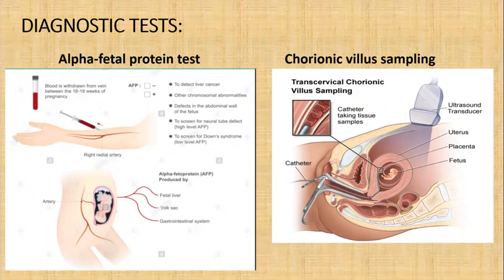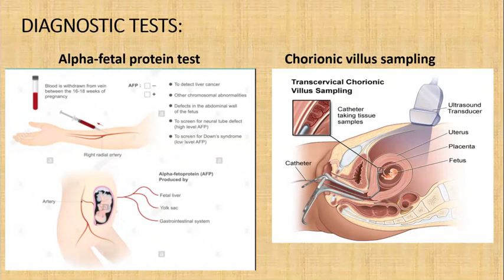We also have chorionic villus sampling. A catheter is threaded in to take some placental tissue. It is an early antenatal test to diagnose fetal karyotype, sickle cell anemia, phenylketonuria or PKU, Down syndrome, and Duchenne muscular dystrophy. It is done between the 8th and 12th weeks. Remember the AFP test is done between 16th and 18th weeks, while chorionic villus sampling is done earlier, between 8th and 12th weeks.